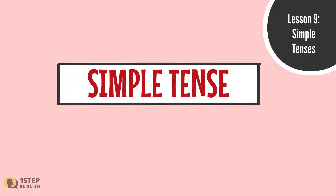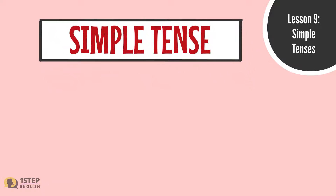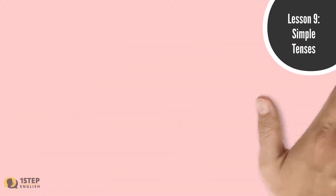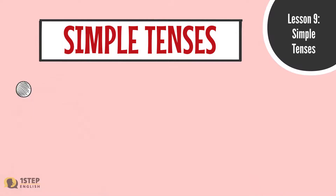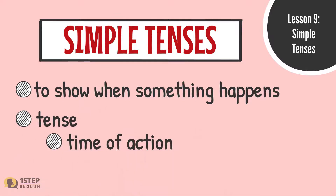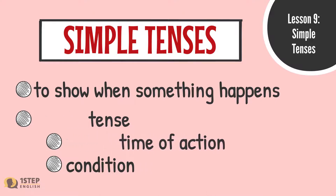Using verbs correctly is one of the most important language skills to acquire. In speaking and writing, you often need to indicate when something happens — now, yesterday, tomorrow. In English, the different tenses of verbs are used to show when something happens. A tense is a form of the verb that shows the time of an action or a condition.